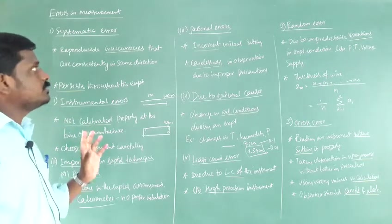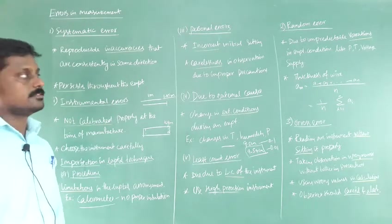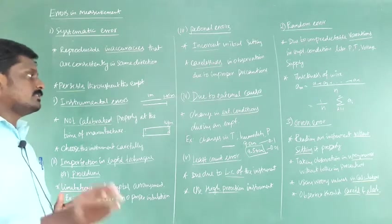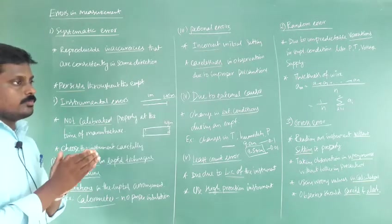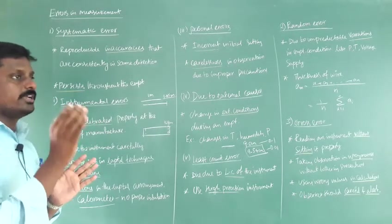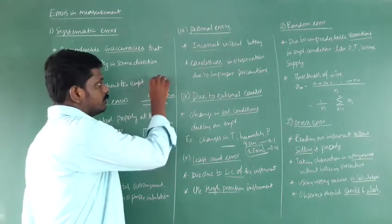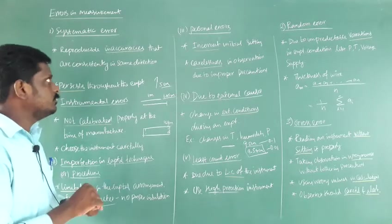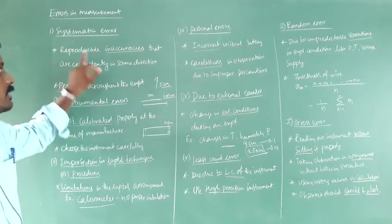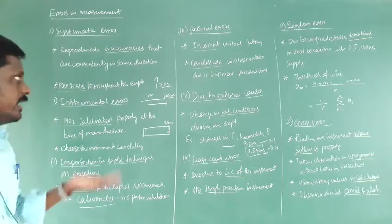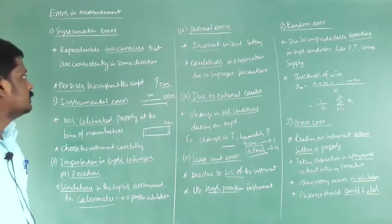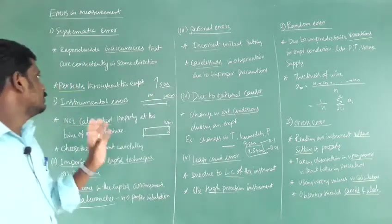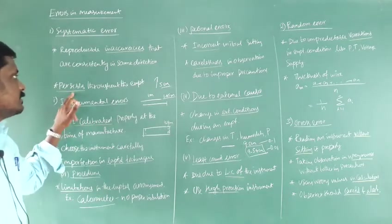Systematic error means reproducible inaccuracies that are consistently in the same direction. For example, you are using a tape that has a length of 1 meter, made up of some elastic material. After using it for 6 months or 1 year, the length may increase by 5 centimeters, making it 1.05 meters. So when you measure something using this tape, there will be an error that is consistently in the same direction and persists throughout the experiment. If your instrument is wrong, your result will also be wrong.